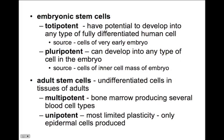There are multiple different types of stem cells. Totipotent stem cells have the potential to develop into any type of fully differentiated human cell — these are the source cells of the very early embryo and are the ones with so much controversy. Pluripotent stem cells can develop into any type of tissue in the embryo; these are cells of the inner cell mass. Adult stem cells are undifferentiated cells in adult tissues — they can be multipotent, like bone marrow cells, or unipotent, which are most limited in plasticity. For example, unipotent skin stem cells could only become epidermal cells.